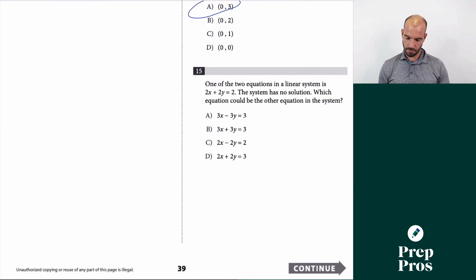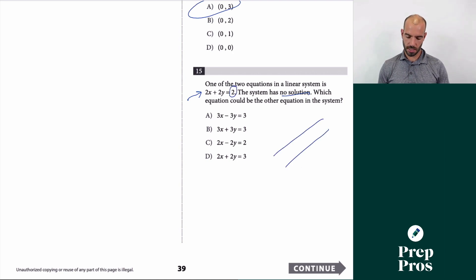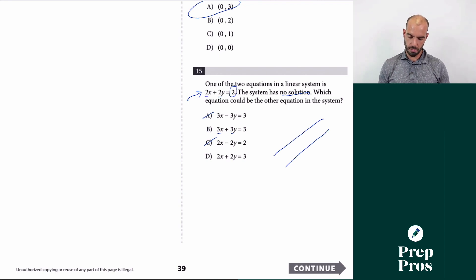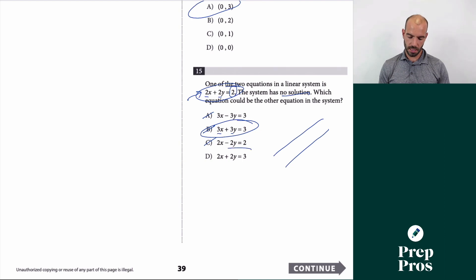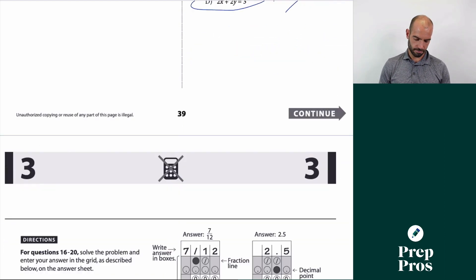Number 15: looking for no solution. For no solution, the x and y coefficients must be proportional but the constants different — the lines must be parallel. A and C have different x-to-y proportions, so they're out. B gives identical equations (infinite solutions). D has the same coefficient ratio but different constants — parallel lines — so D is correct.